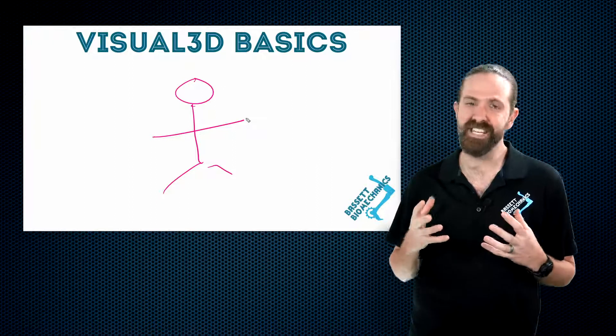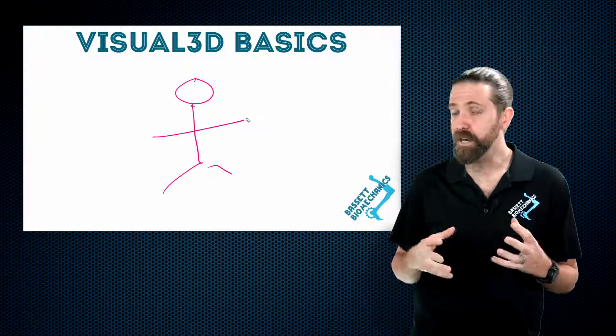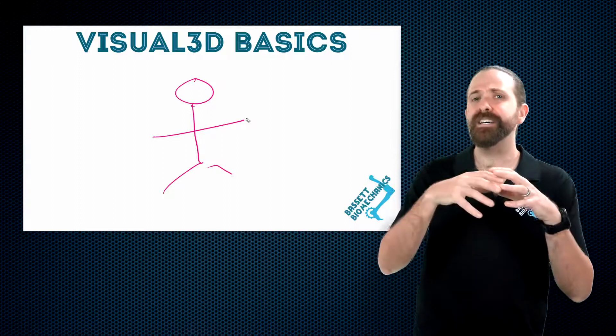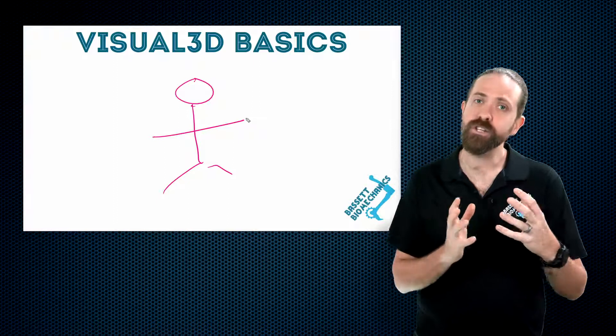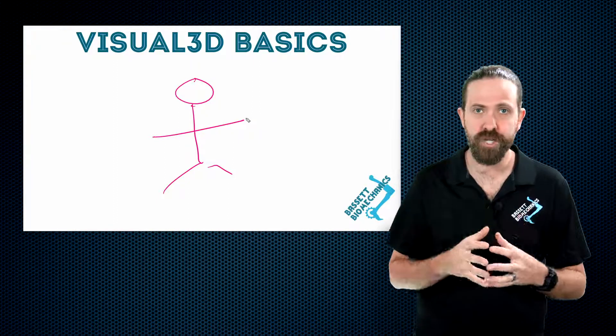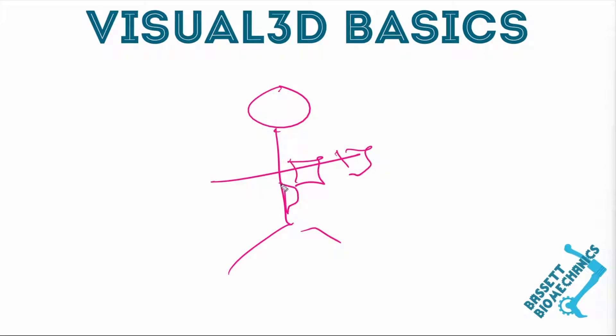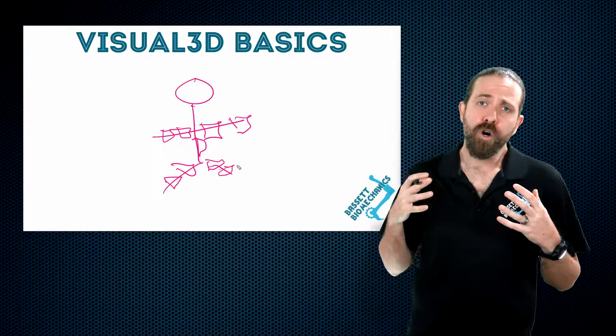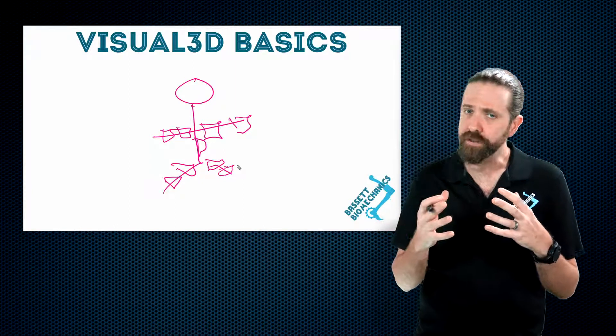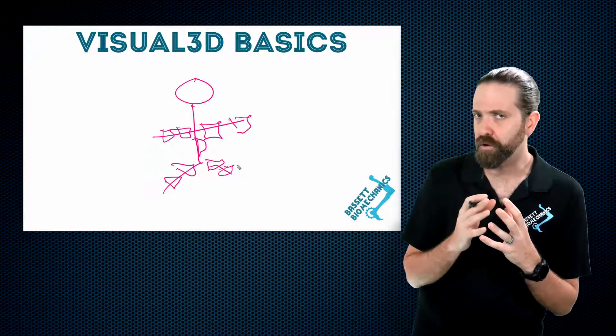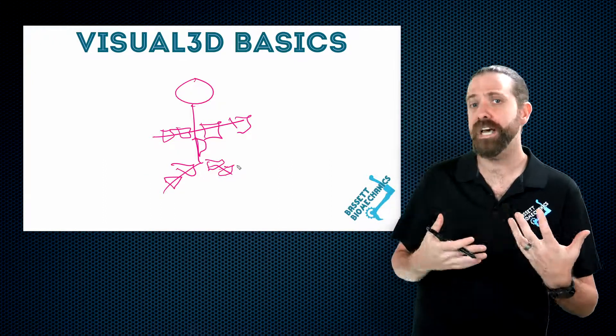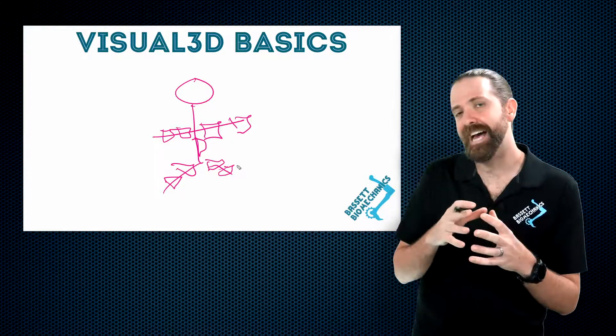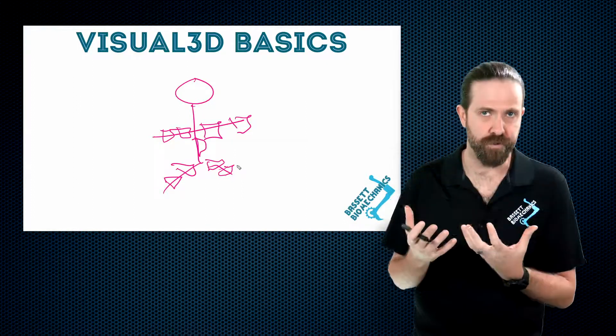This model is generated in different ways depending on how you collected the data. But no matter what, you have a model in Visual 3D and you have motion files associated with that model. That model will include individual segments. These segments are going to be related to each other based on that biomechanical model, which allows us to calculate things like joint angles and joint moments if that data has force plate data associated with it.